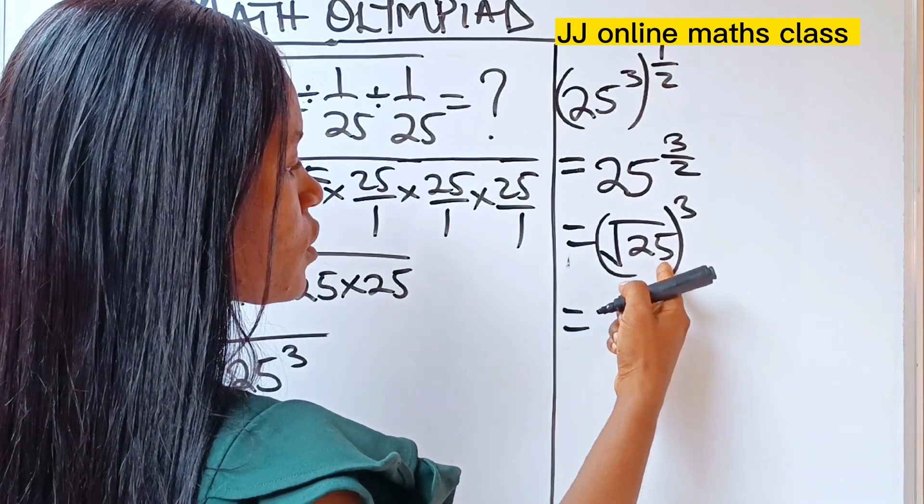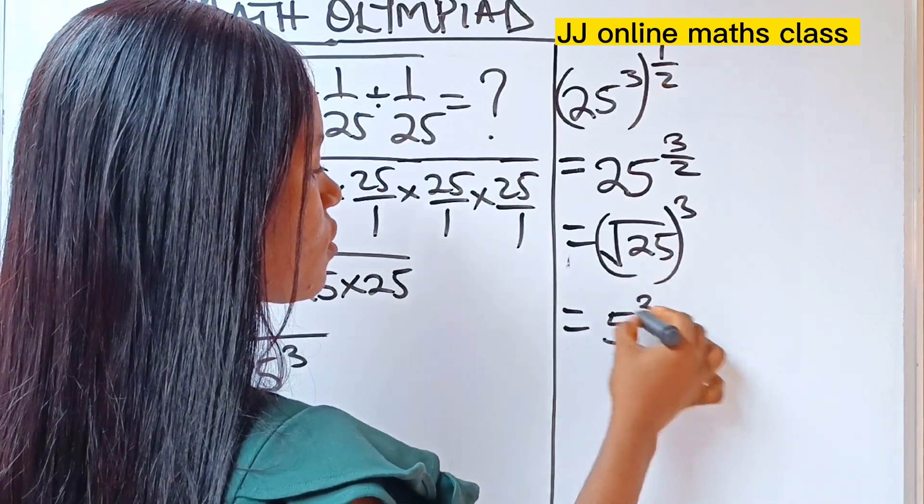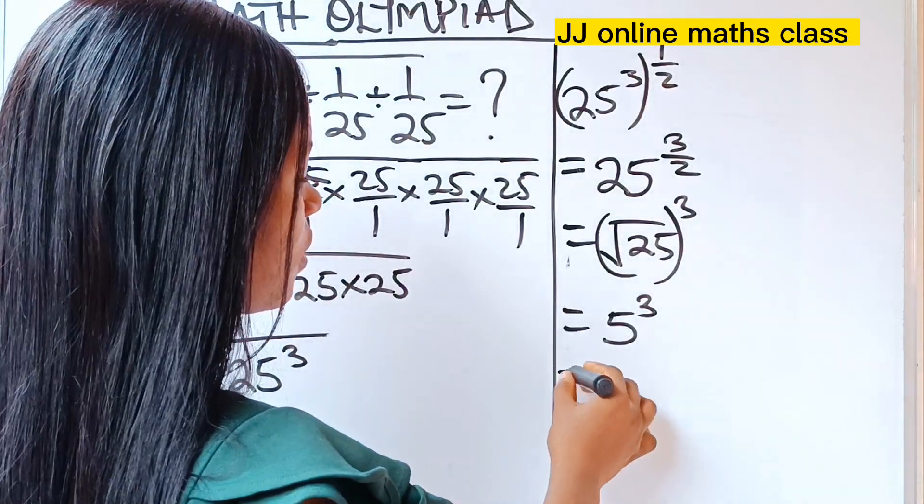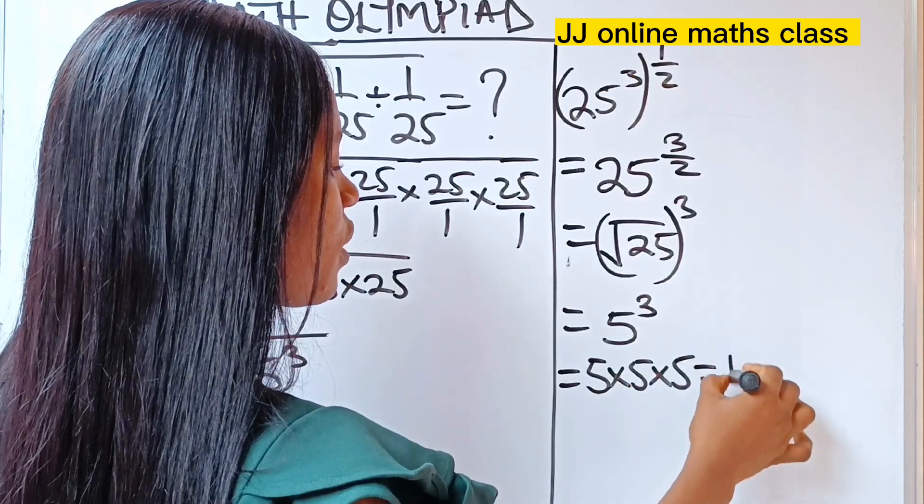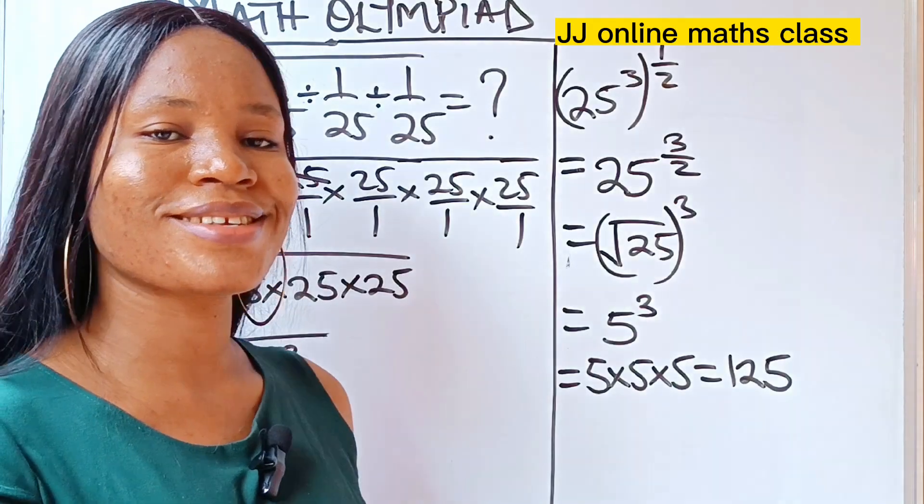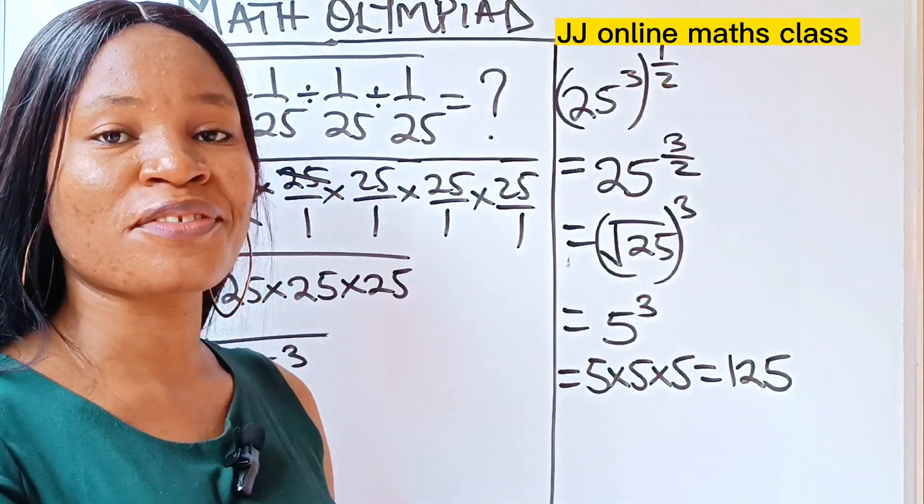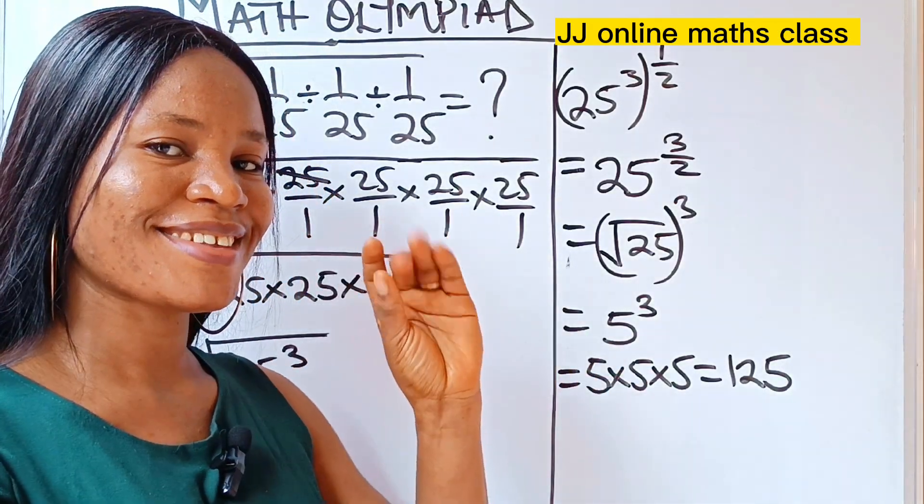So this is equal to square root of 25 will give us 5 to the power of 3. Now this is the same thing as 5 times 5 times 5, which will give us 125. And this is the solution. Thank you so much for watching and do have a great day. Bye.